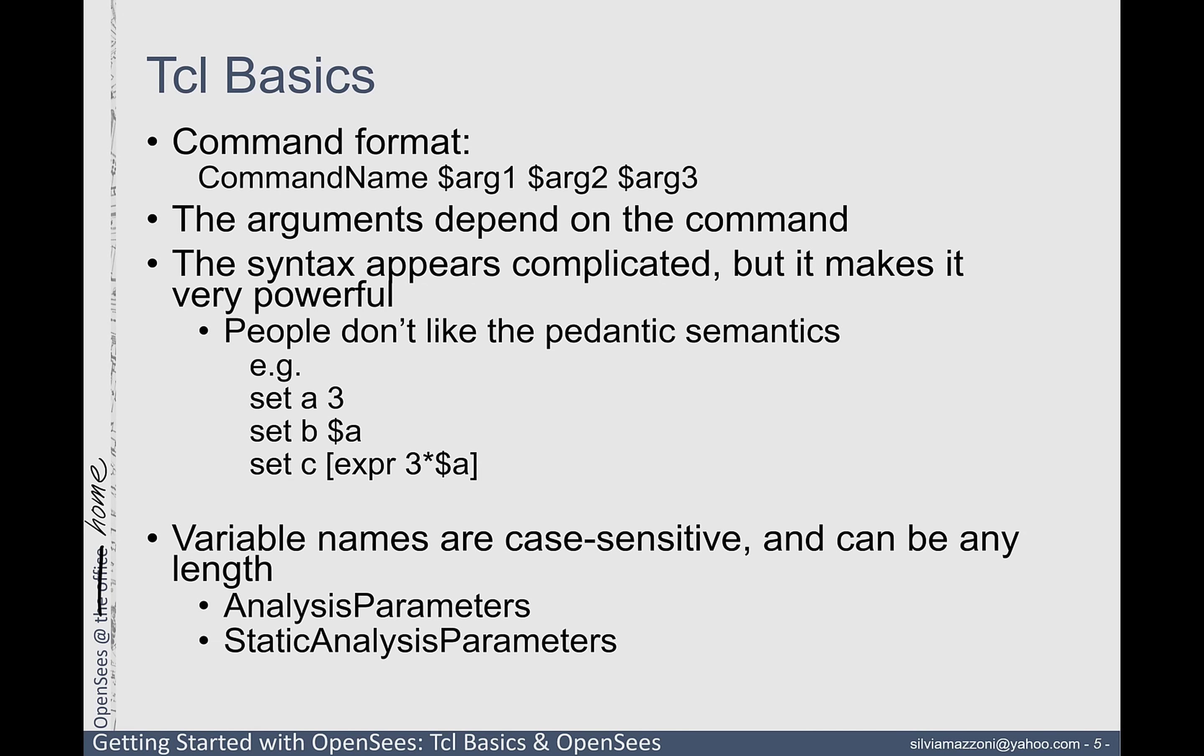You have to actually write set A 3 instead of A equals 3, which to me kind of makes a lot more sense. It's almost more conversational than anything else. If you want to set B equal to A, you actually have to set B dollar sign A. What is that dollar sign? Well, the dollar sign means it's evaluating the value of A. If you set B A with no dollar sign, then B is actually equal to the letter A. So it's really semantics of it are very important and make it powerful. If you want to set C equal to 3 times A, you actually have to write this type of expression.